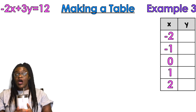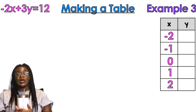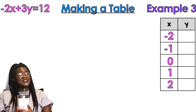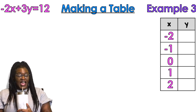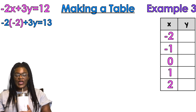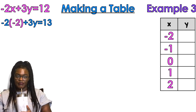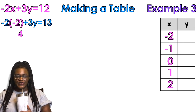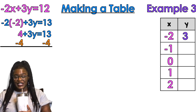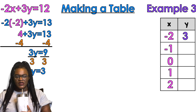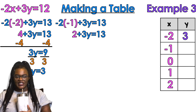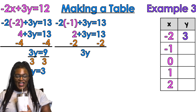Our equation has changed — we are now in standard form, not slope-intercept form, so that's going to complicate things a little bit. We're using the same x values. We're plugging negative 2 in for x: negative 2 times negative 2 gives me positive 4, plus 3y equals 13. We have to isolate y, so when we isolate y we're going to get approximately 3.6 for that second one.